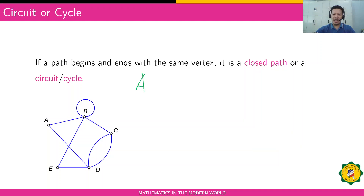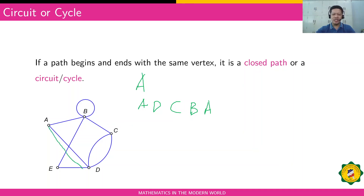Let's say a circuit that starts with A and ends with A. So we have A, you go to vertex D, go to vertex C, then B, and then go back to A. That's a circuit that starts with A and ends with A — it's actually a closed path.